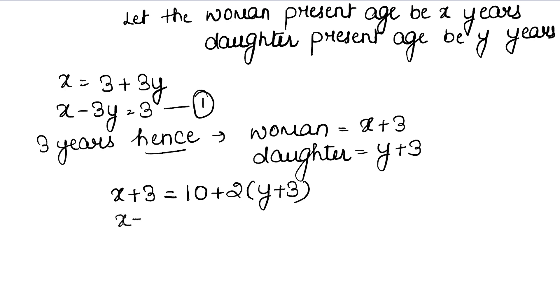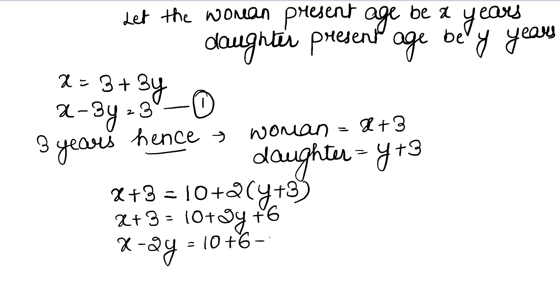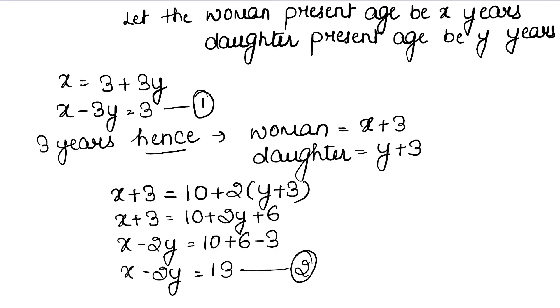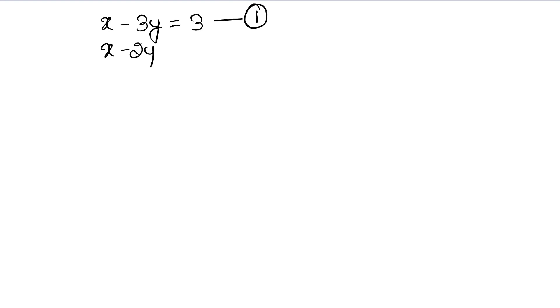To solve this, x plus 3 equals 10 plus 2y plus 6. Moving x and y terms to their respective sides, we get x minus 2y equals 13. This is our second equation. So our first equation is x minus 3y equals 3, and our second equation is x minus 2y equals 13.